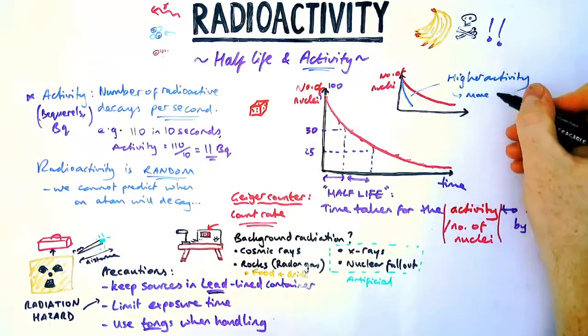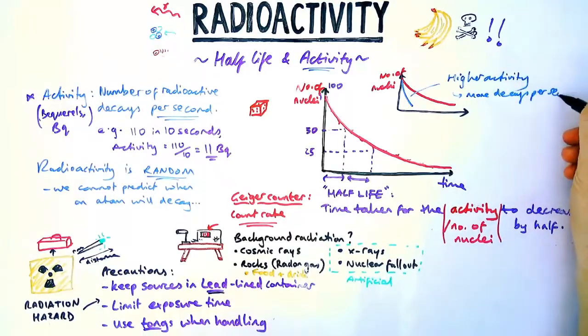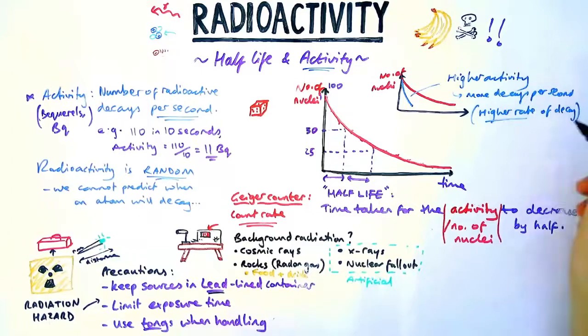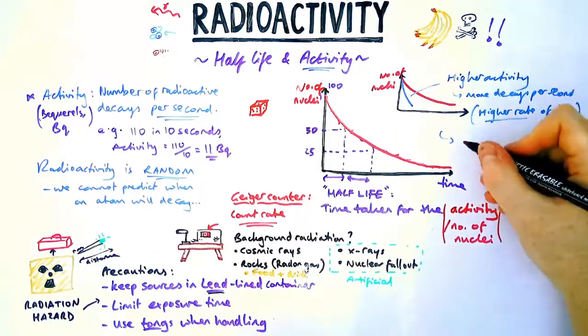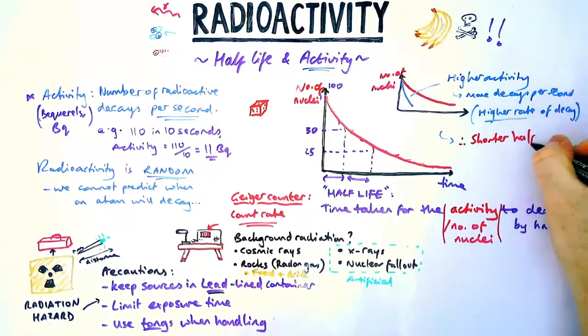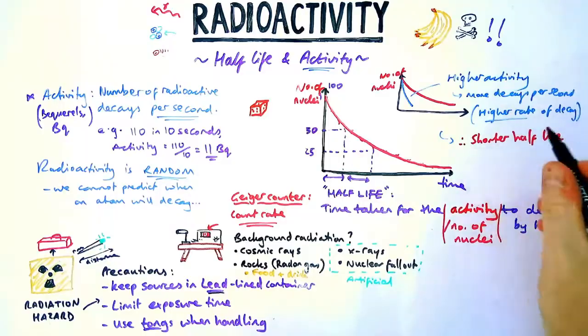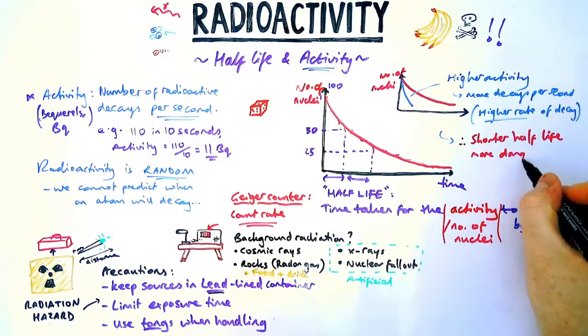Now what that steepness means is that it has a higher activity. If the number of nuclei per second is decreasing greater, then it means that activity, the number of decays per second, is at a higher level. So if my y-axis is number of nuclei and it's got a steeper gradient, that means that it has got a higher activity.